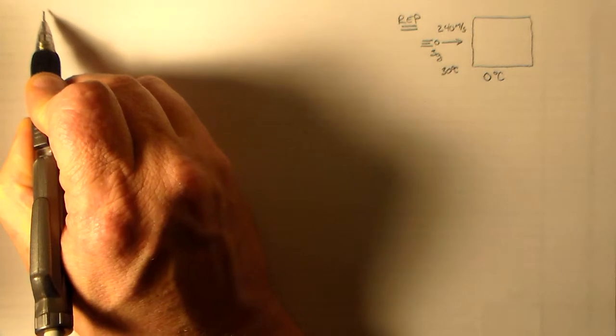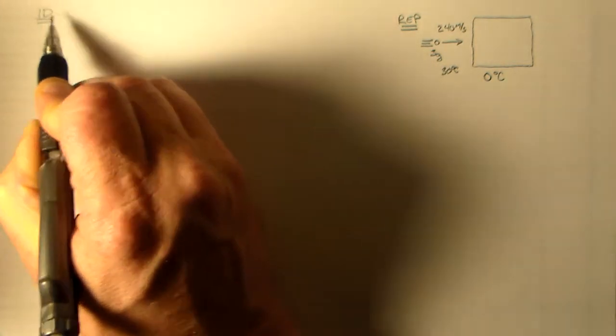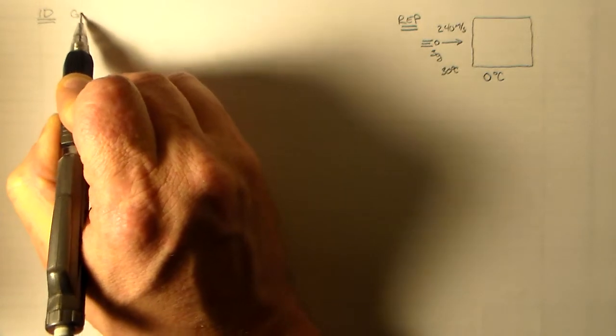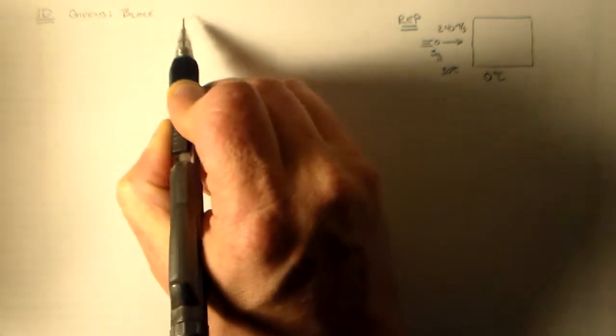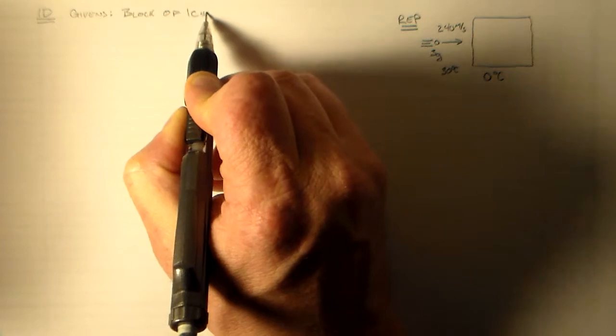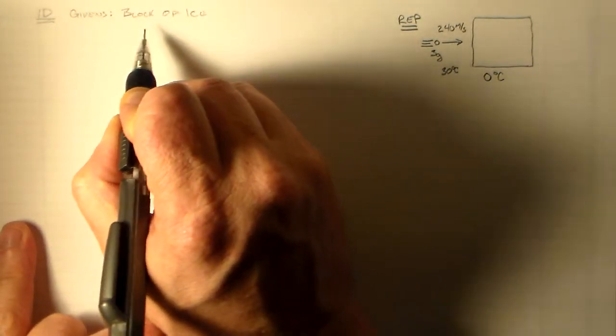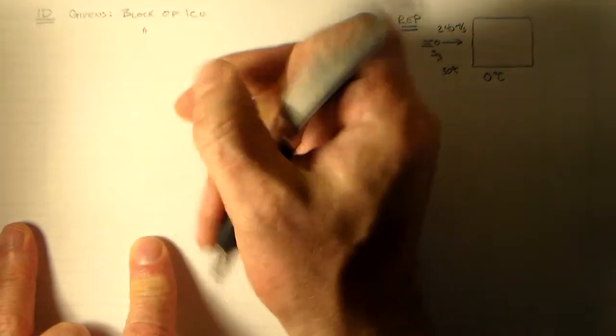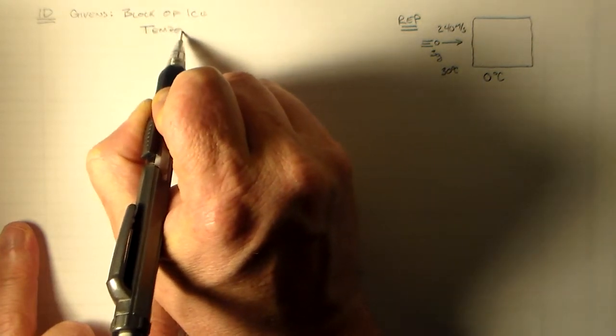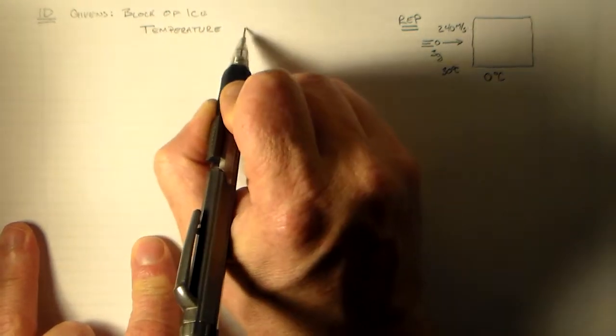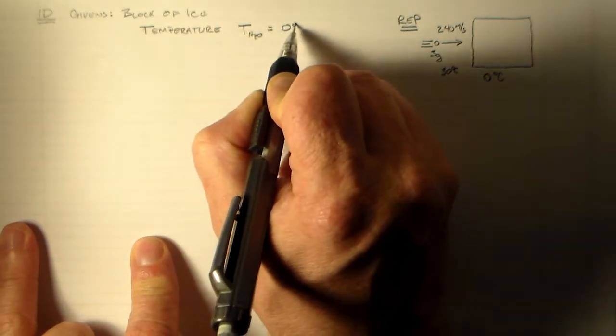So now we want to just list out all the things that we know. So we're calling that ID. And we'll start with our givens. So we have a block of ice. And we said that that block of ice here had as much as we wanted of it. And it has a temperature. T ice, H2O, is equal to zero degrees C.